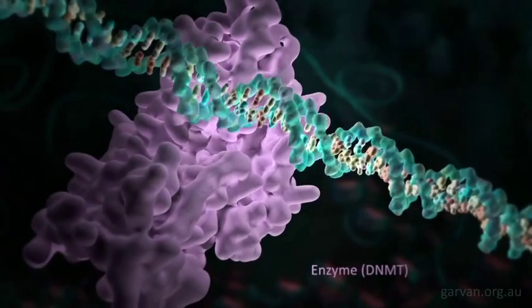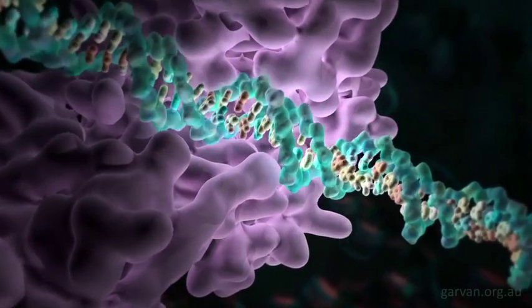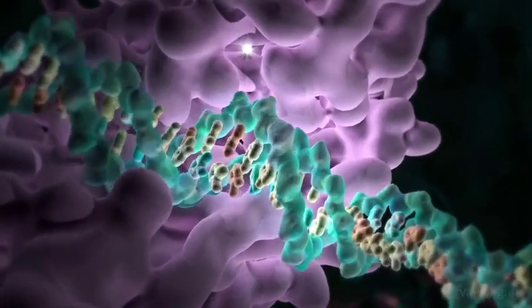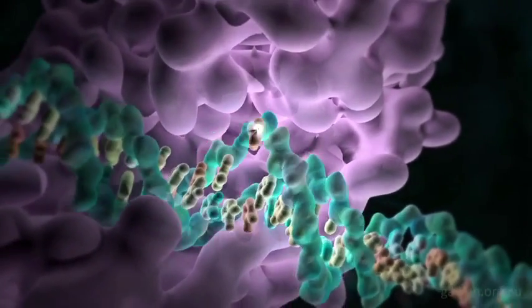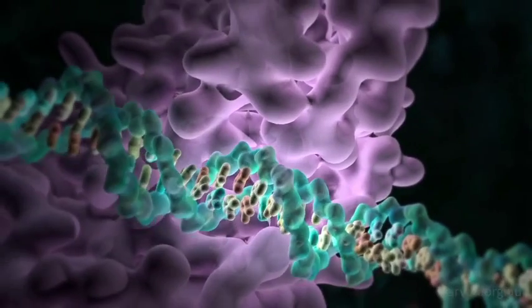Here the enzyme DNMT attaches to the DNA and a methyl group is transferred to a cytosine base that has rotated out from the DNA strand. This process called methylation mainly occurs where cytosine is followed by guanine, or CPG sites.